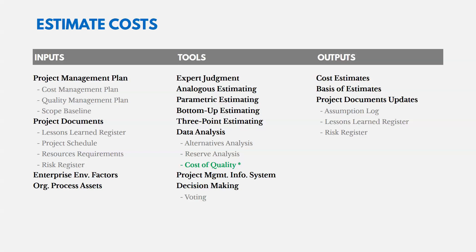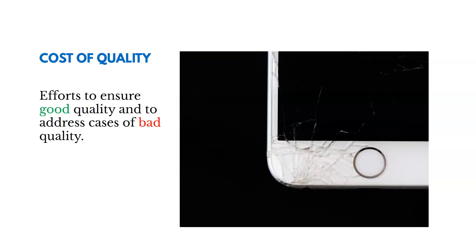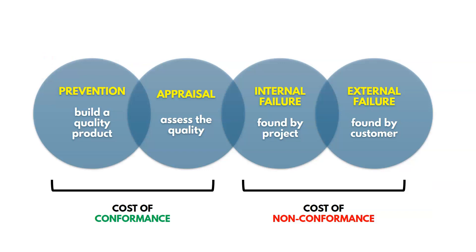Let's look further at the tools for the estimate costs process and talk about cost of quality. Cost of quality refers to the efforts to ensure good quality and to address cases of bad quality — we need to consider quality costs as we come up with our cost estimates. There are four categories of quality costs: prevention, appraisal, internal failure, and external failure. The first two are called cost of conformance, and the last two are costs of non-conformance, which we try to avoid.